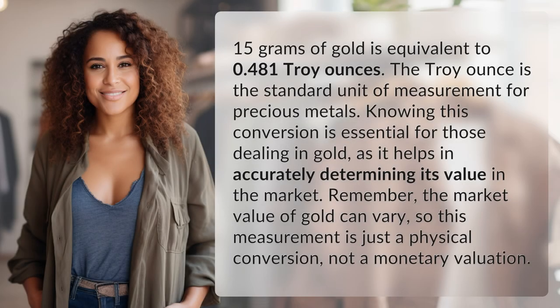15 grams of gold is equivalent to 0.481 troy ounces. The troy ounce is the standard unit of measurement for precious metals. Knowing this conversion is essential for those dealing in gold, as it helps in accurately determining its value in the market.